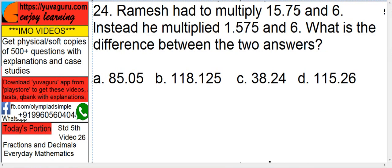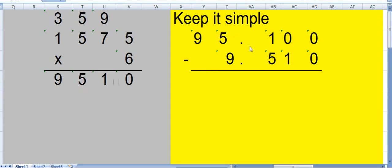For the first number it is 2 from the right and for the second number it is 3 from the right. So our numbers are 95.10 and the second is 9.510, 3 after that.